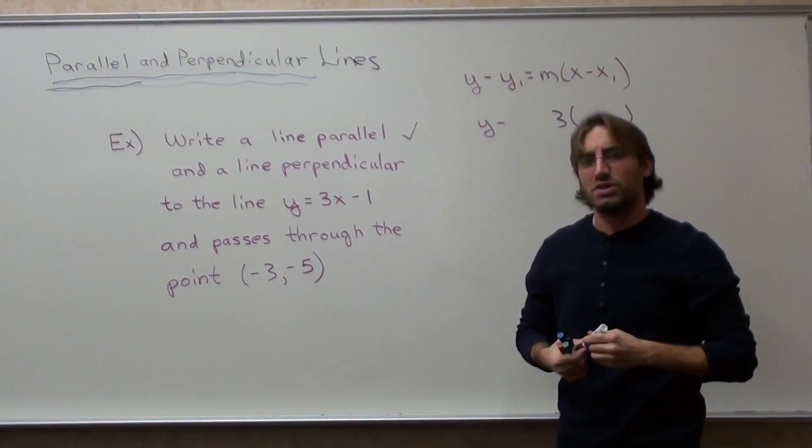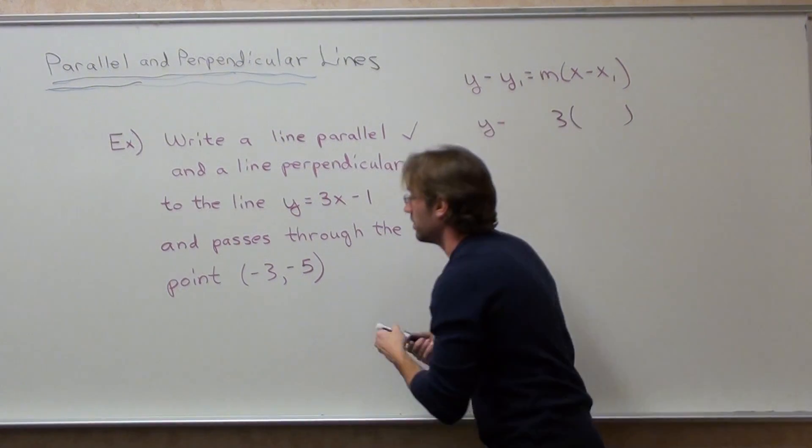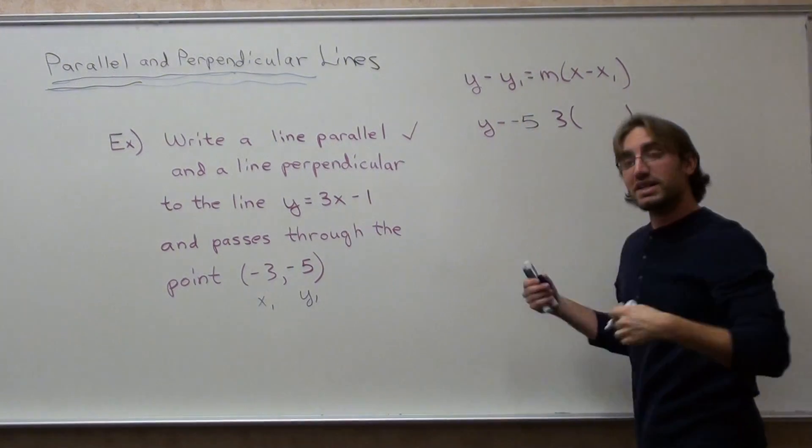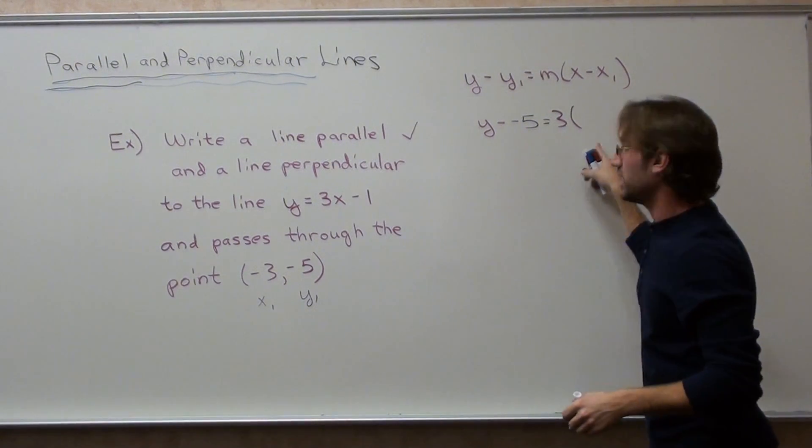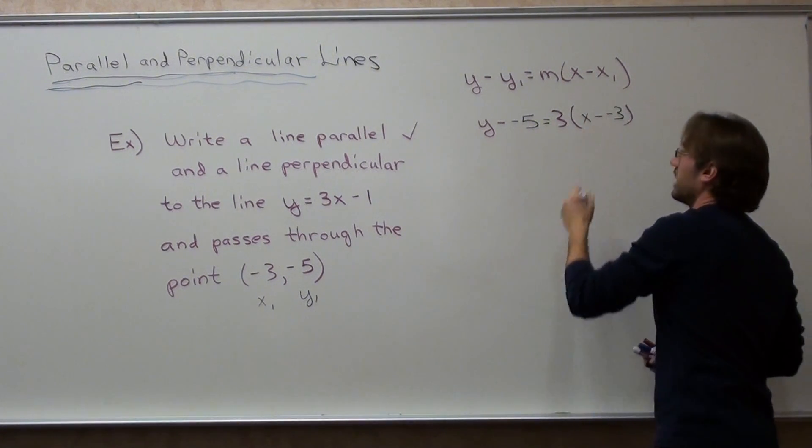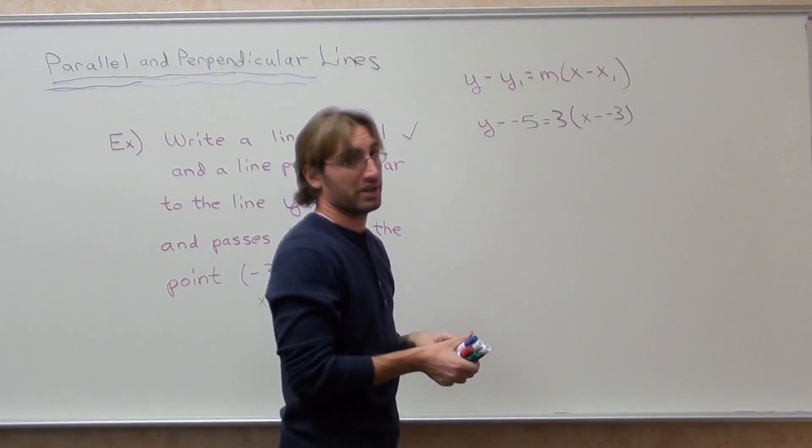Now, you're going to ask, well, what's my x1 and what's my y1? I'm glad you asked. Here it is. Here's the point they gave you. So, it's y minus negative 5 equals 3 times the quantity x minus negative 3. And then I'm going to go ahead and change the two negatives to a positive on this step right now.